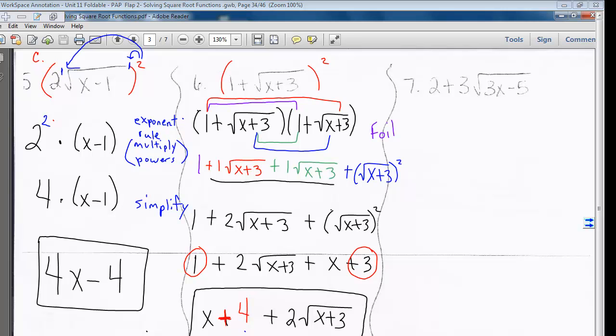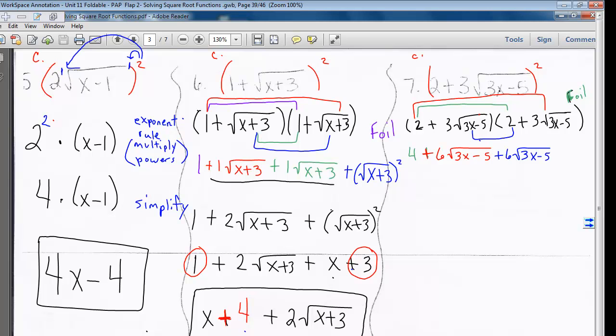Look at example 7. This is also type C. So I FOIL. 2 times 2 is 4. 6 times the square root of 3x minus 5. The inner terms give me 6 times the square root of 3x minus 5. And the outer terms give me 9 times 3x minus 5. Notice I left out that step from before.